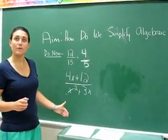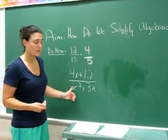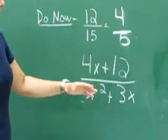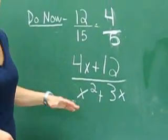Now let's take it one step further and do it with an algebraic expression. Before we do anything, let's look at this example. 4x plus 12 over x squared plus 3x.